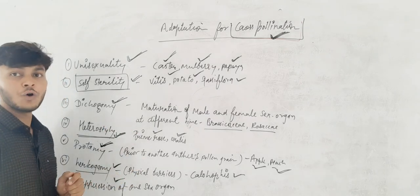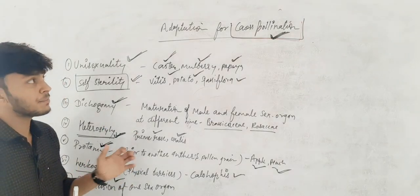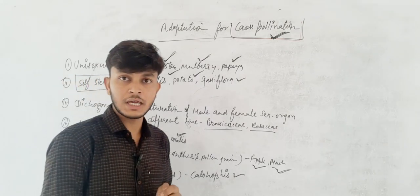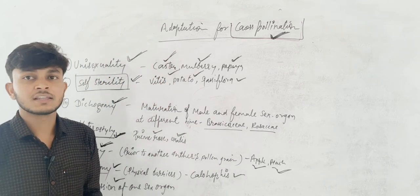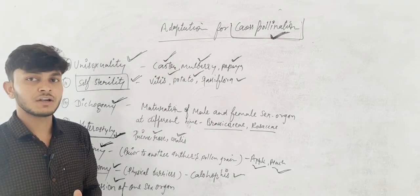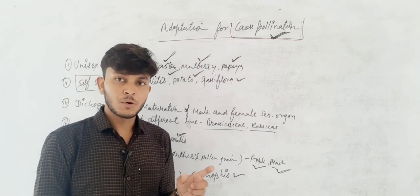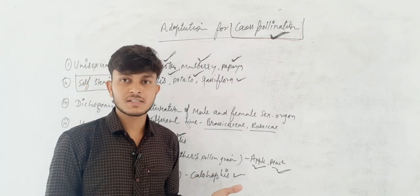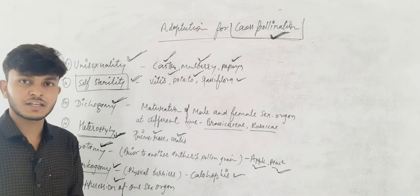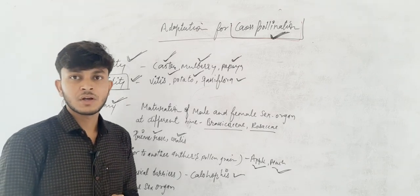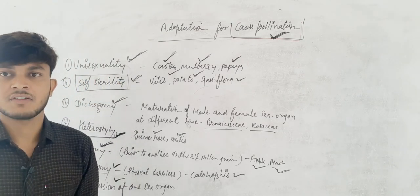That is all. I hope you have understood. This topic of cross-pollination — xenogamy — is now complete. In the next lecture, we will talk about pollen-pistil interaction and pollen-stigma interaction, and see what changes we can observe. I hope you have understood this. Thanks. Have a nice day.